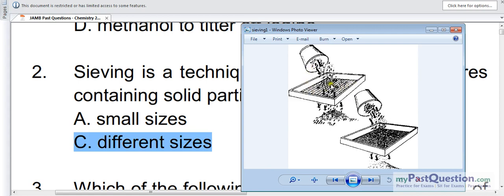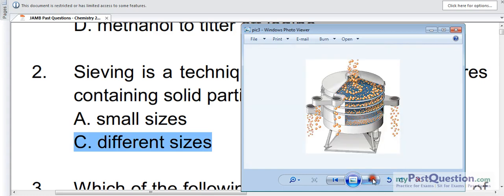You know, these particles here are of larger sizes than this one. So this one can then be separated from this one using a process called sifting.